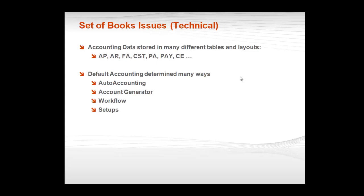From a technical standpoint — and this is very selfish — but as the programmer, I had to learn where the accounting was stored for all of the different modules. It was not consistent. So accounts payable, accounts receivable, fixed assets, and so on each had their own set of tables where accounting was stored, and it was not a consistent mechanism. Additionally, how the accounting was determined was different based on whichever module you were trying to research — you might have been using auto accounting, account generator, workflows, setups, or you might have created your own custom code.